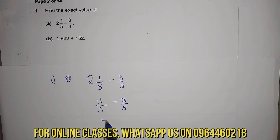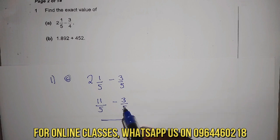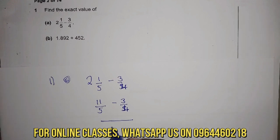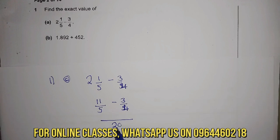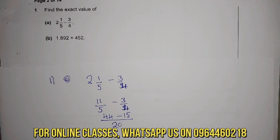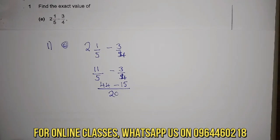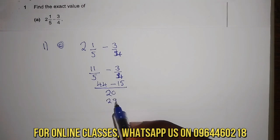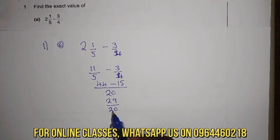We find the lowest common denominator. The denominators are four and five, so the number into which four and five can both go is twenty. Five into twenty goes four times, times eleven gives forty-four. Minus: four into twenty goes five times, times three gives fifteen. So forty-four minus fifteen gives twenty-nine over twenty. Twenty goes into twenty-nine once, remainder nine, so the answer is one and nine over twenty.